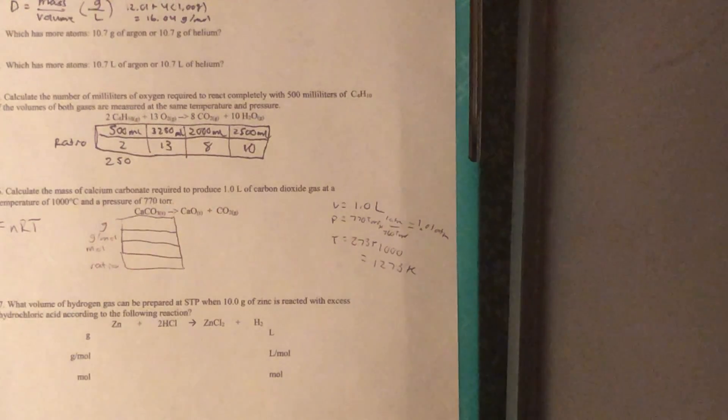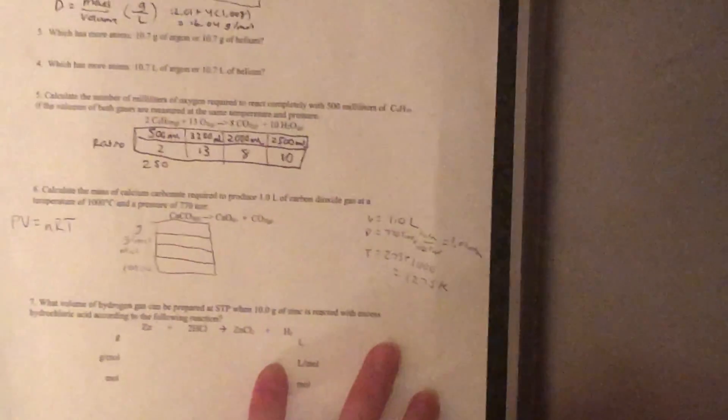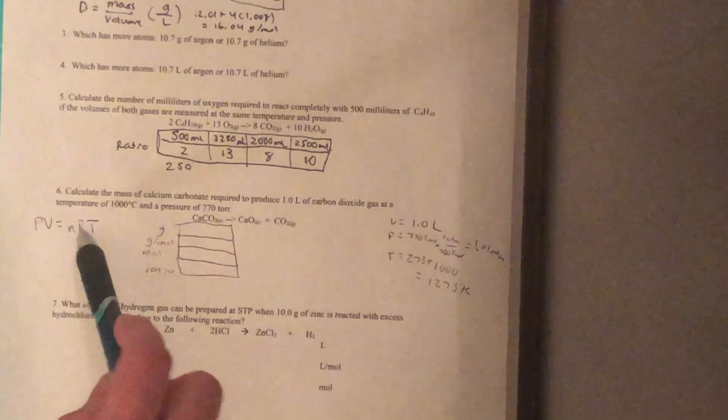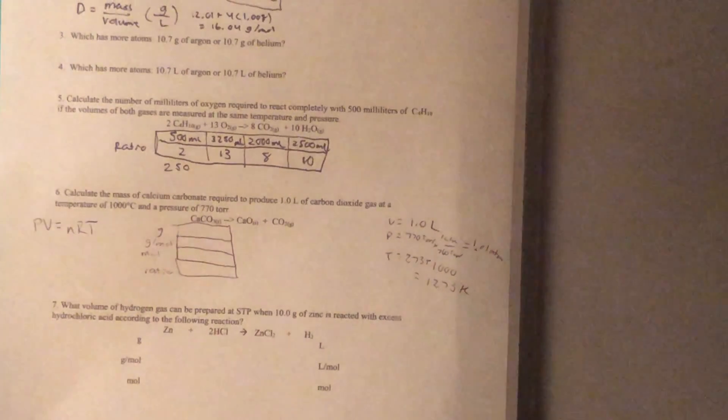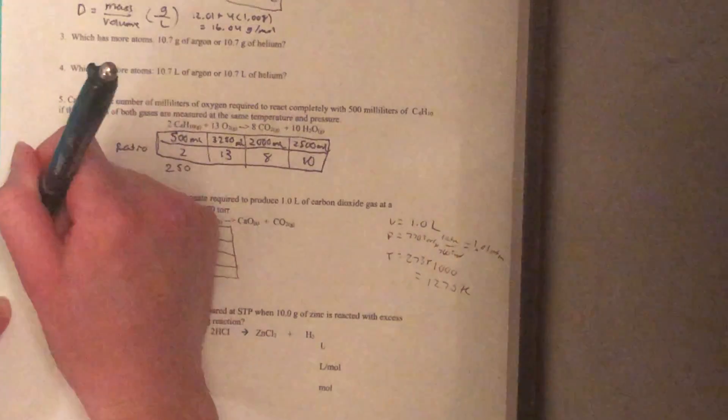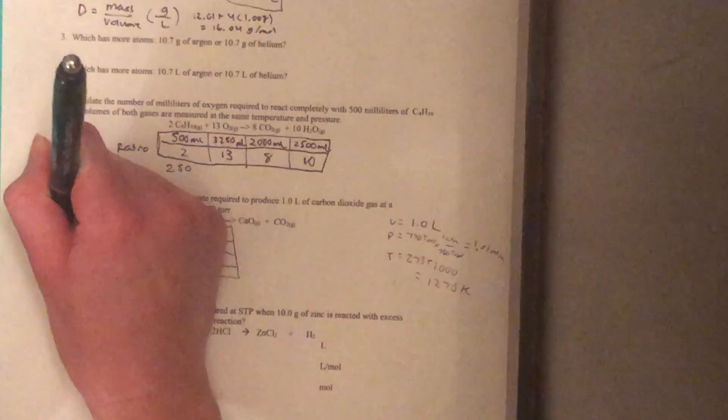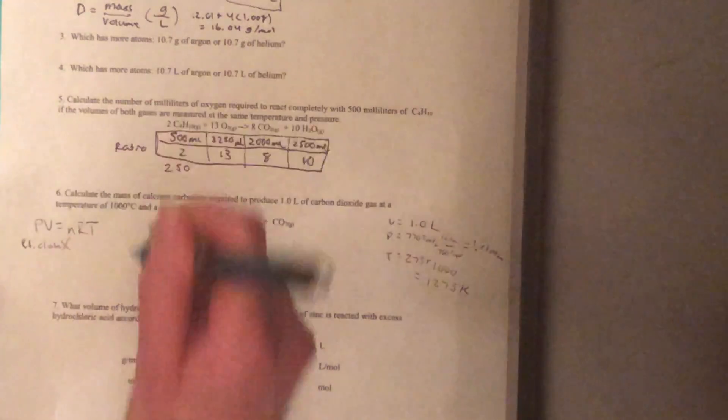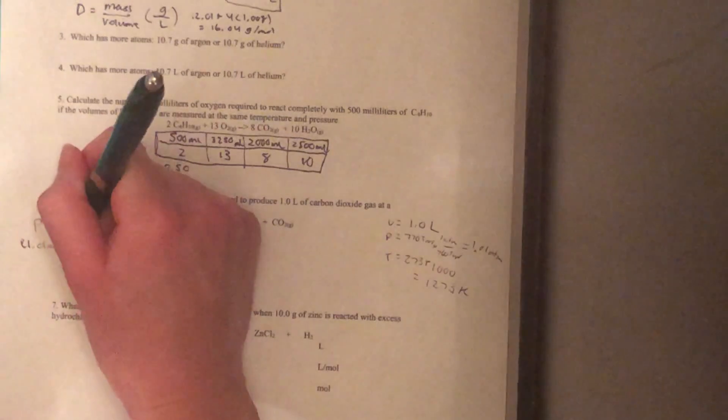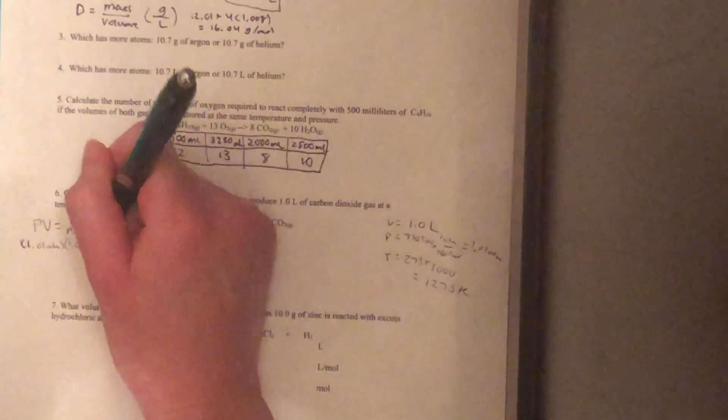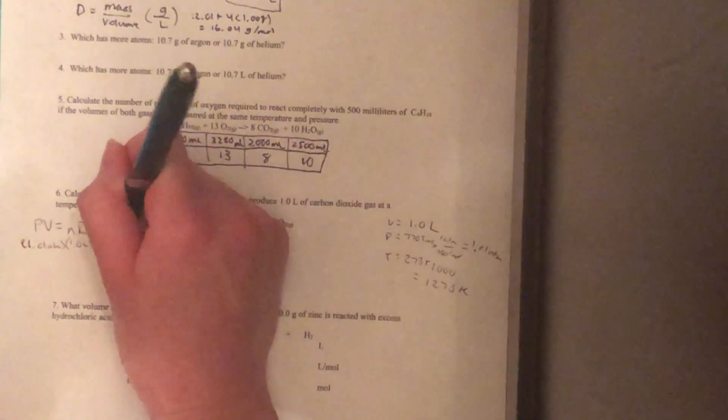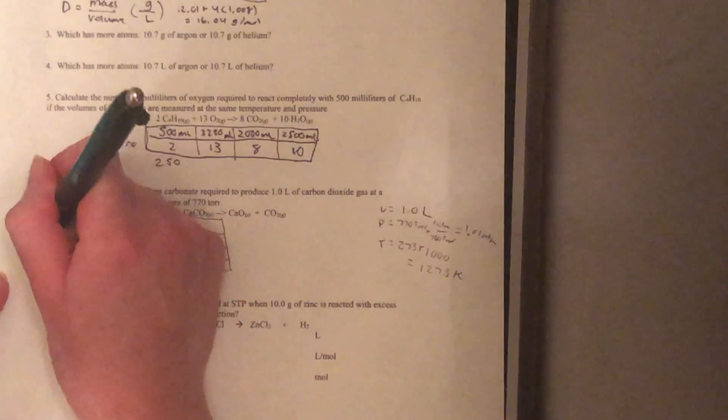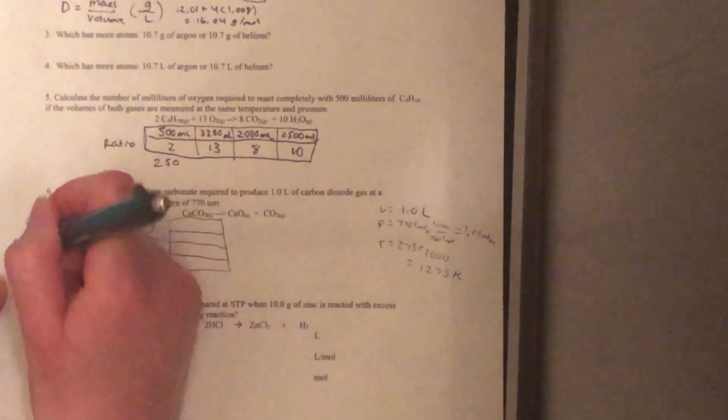So we are solving for n. We'll go ahead and fill this in. Our pressure is 1.01 atmospheres. Our volume is 1 liter. We are solving for n. I'm actually going to go down on the second line here, running out of space.